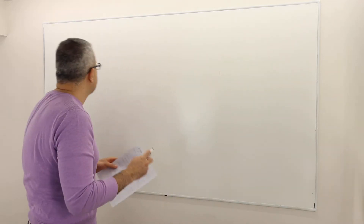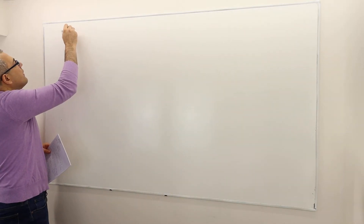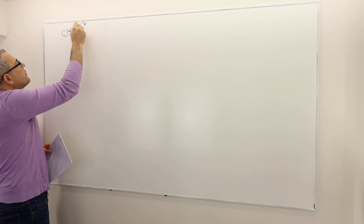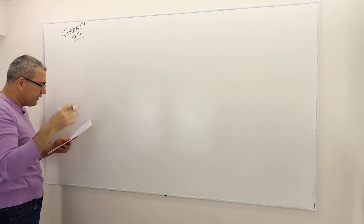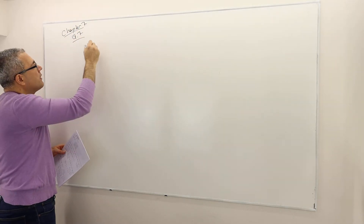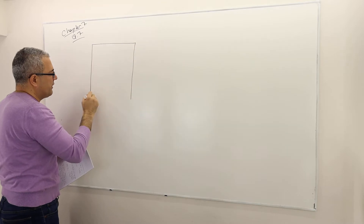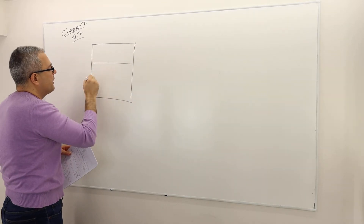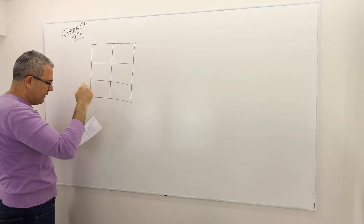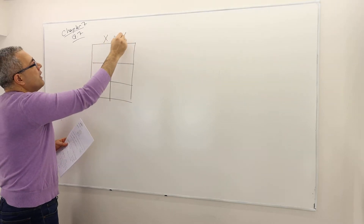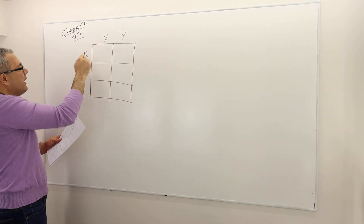This is chapter 6, question number 7. The question gives a simple 3 by 2 matrix, meaning the first player has 3 strategies and the second player has 2. The first player's strategies are K, L, M, and the second player's strategies are X and Y.